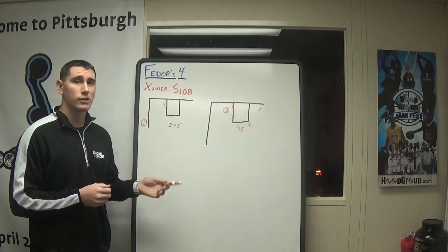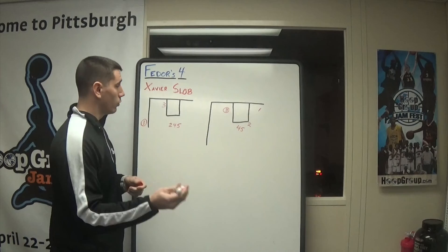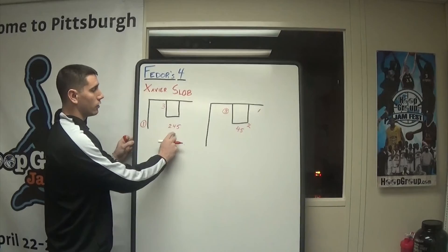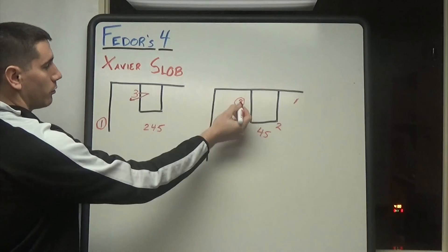Next up we have a special situation play, sideline out of bounds here. Something I saw Xavier run in their game down in Florida. Now it's a great action if you need a three, end of the game, or if you just want to get the ball in and play. But I really like this. So what we have here is our one taking the ball out, our three's positioned down on the block, and we have a line of two, four, and five. Two is going to be your shooter, the guy that you want to get the shot. Now this guy is going to work to get open, so he'll walk his man in, pop out, try to receive the ball somewhere just off the block.